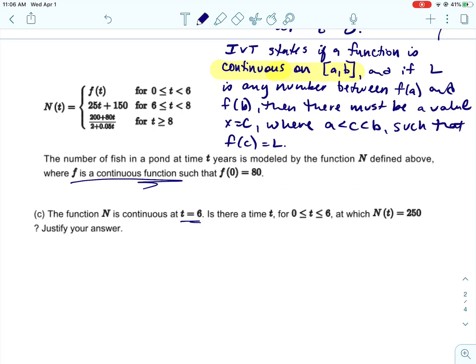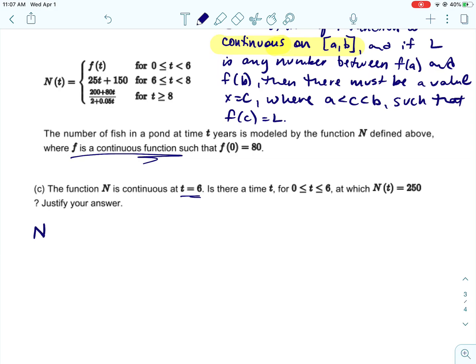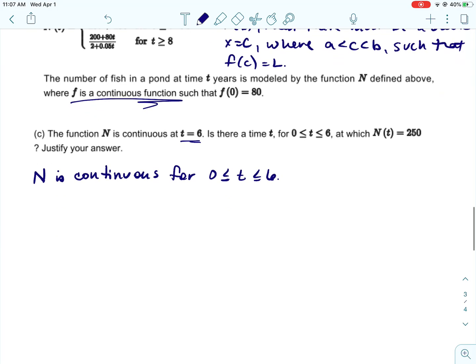Let's just start off with the continuous condition. So we need to show that this function is continuous on the closed interval. It tells you that the function is continuous at 6, and it tells you f is a continuous function. 0 has a value. So we do know that N is continuous for 0 is less than or equal to t is less than or equal to 6. We took care of that one.